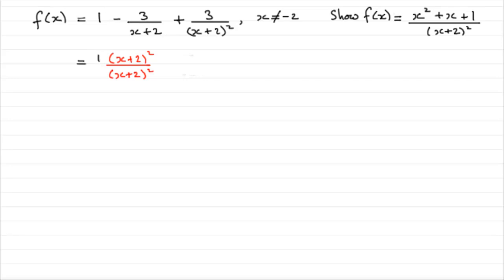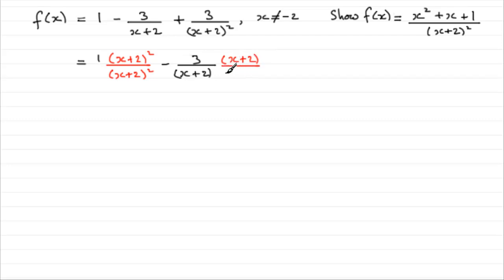For the second fraction, we write that back in again — minus 3 over x plus 2 — and what we're going to do is times top and bottom of this fraction by x plus 2. Again, timesing top and bottom by the same thing is essentially multiplying by 1, leaving it unchanged but changing its appearance. The last fraction is already over x plus 2 all squared.